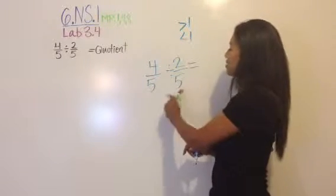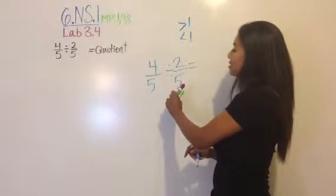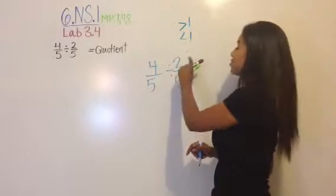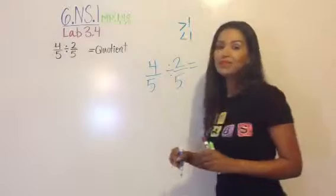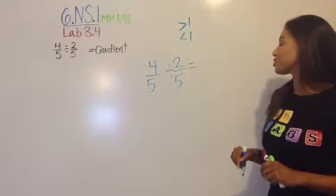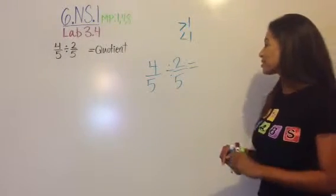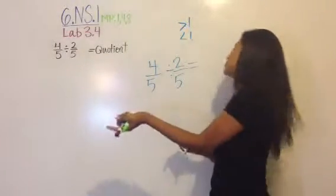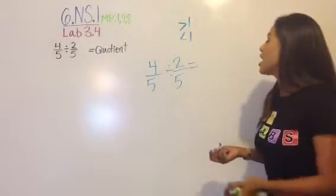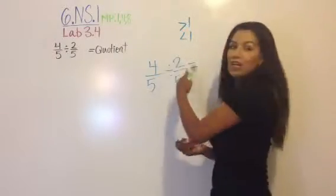Number 1, what is the meaning? This means how many groups of 2 fifths are in 4 fifths. Alright, is this quotient going to be greater than or less than 1? Well, if I had 2 fifths going to 2 fifths, that would be exactly 1, right? Because anything divided by itself is 1.